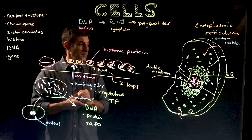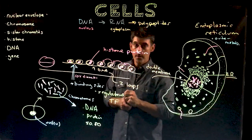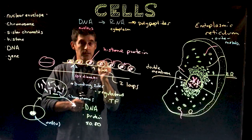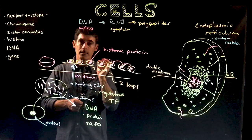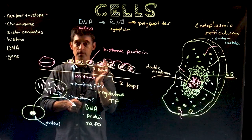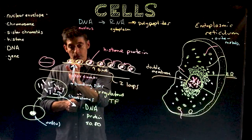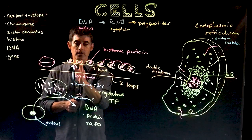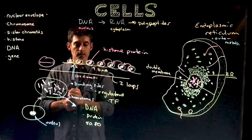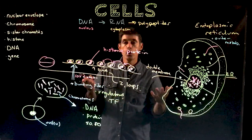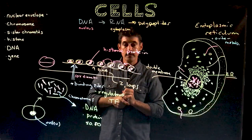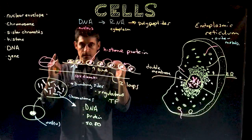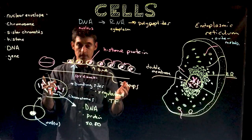If the beginning of a gene is available because it's between histone proteins, that section could potentially be read — if the right regulators and transcription factors are present. If it's locked into a histone protein, it's locked away. For example, the lens of your eye produces a protein called crystallin. You have the gene for that protein in all your cells, but only the cells that made the lens of your eye produce it. In those cells the beginning of that gene is available; in all other cells it's locked up in histone proteins.